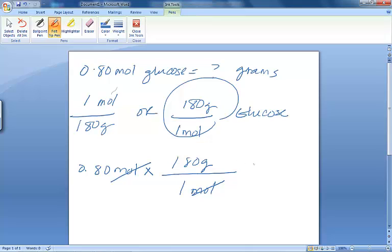0.8 times 180 is 144. Only unit left is grams. And that is how we convert between grams and moles, or relatively any conversion, as long as you know the conversion factor.